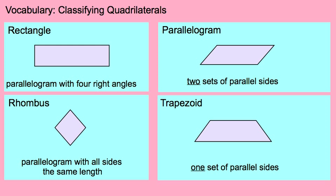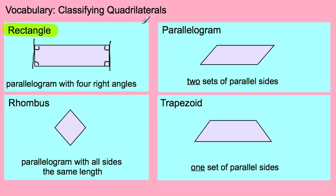Here we are classifying quadrilaterals. There are four classifications — let's go through them quickly. First, a rectangle. A rectangle is a parallelogram with four right angles. Right angles are your corner angles — they form a perfect square. So a rectangle has four of those. The opposite sides are parallel — that's what a parallelogram is. This side is parallel to the opposite side, and the top side is parallel to the bottom side.